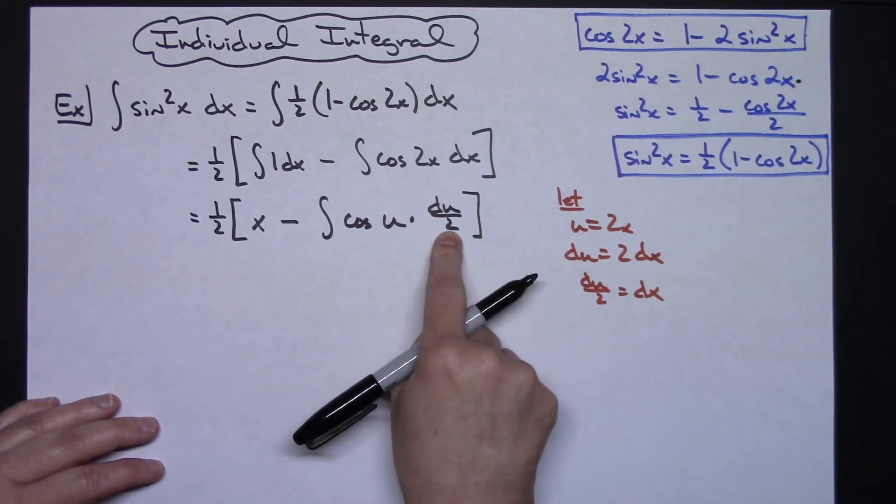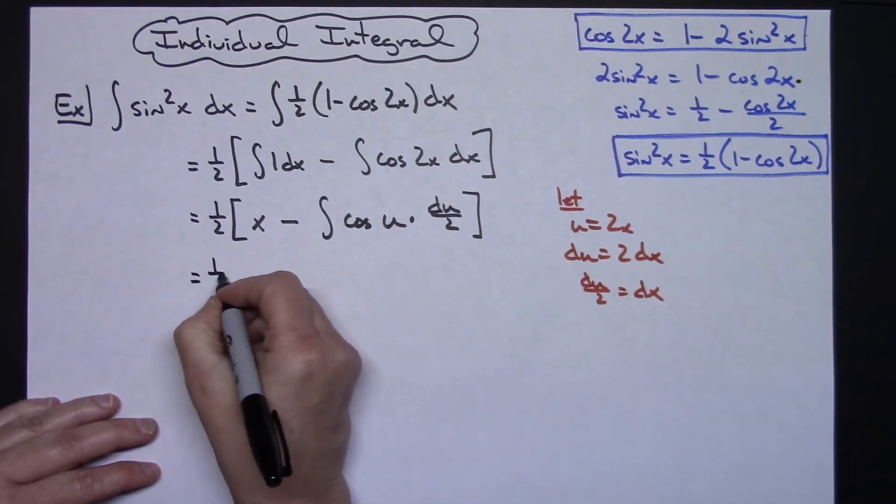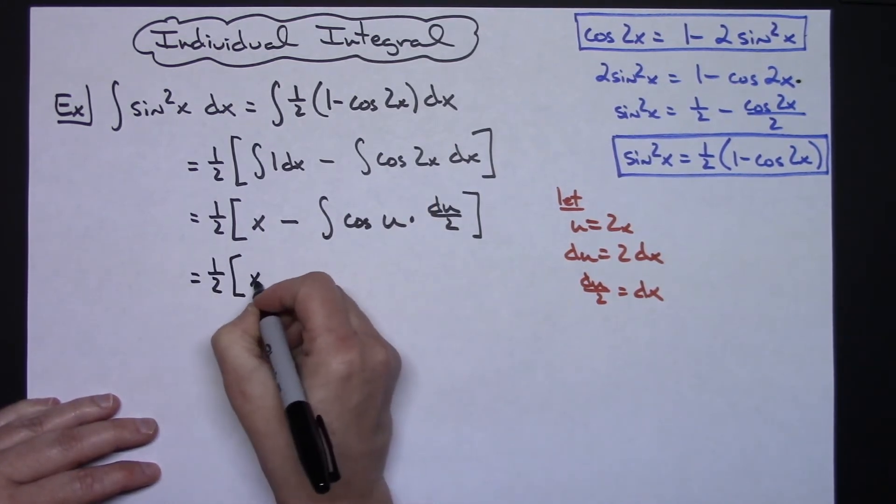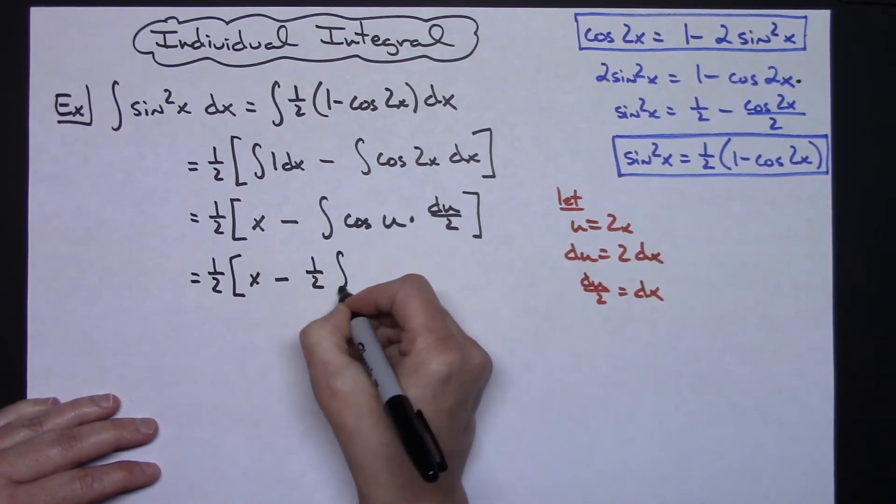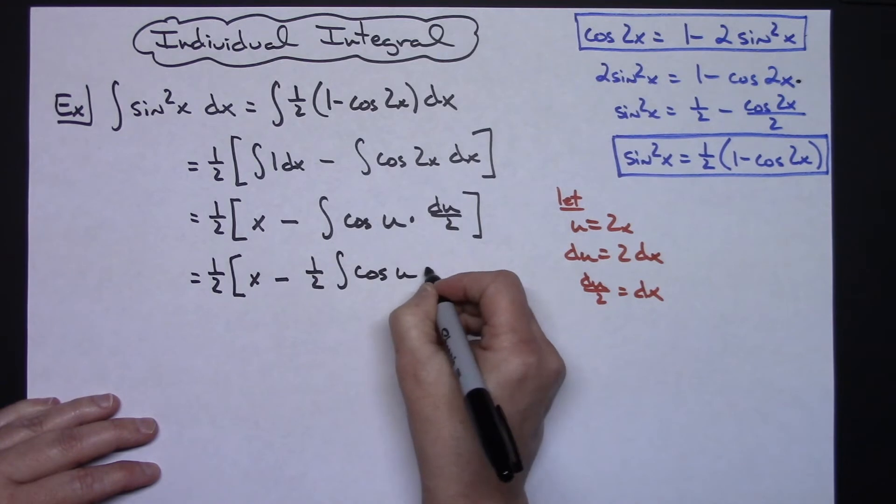Now I'm going to pull out the 1 half here. So I'll have the 1 half times quantity x minus. Pulling out that 1 half, I'll have a 1 half. The integral cosine u du.